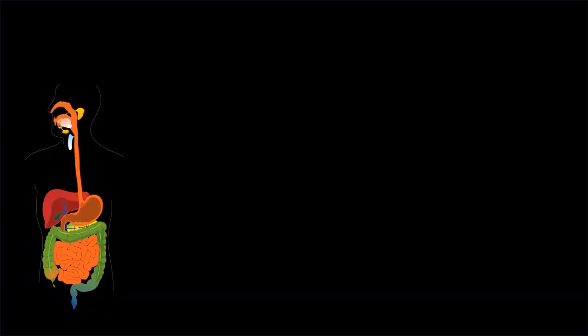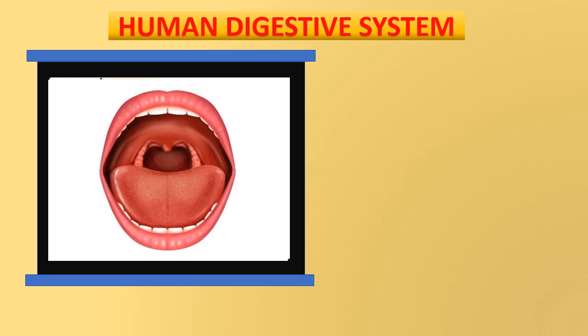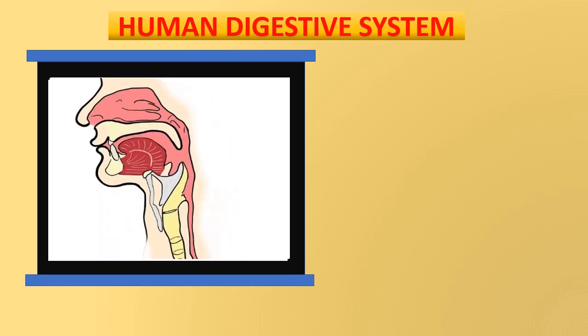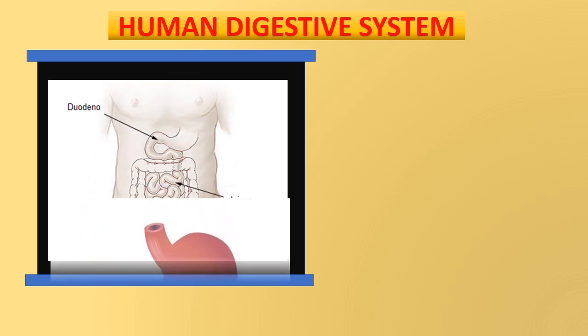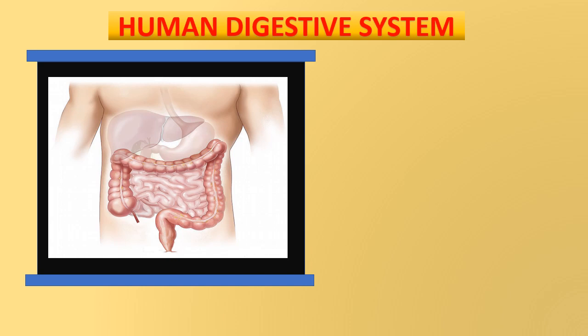In this video, we are going to learn about digestion in human beings. The alimentary canal is basically a long tube extending from the mouth to the anus. We can see that this tube has different parts. They are mouth, buccal cavity, pharynx, esophagus, stomach, small intestine, large intestine, rectum and anus.